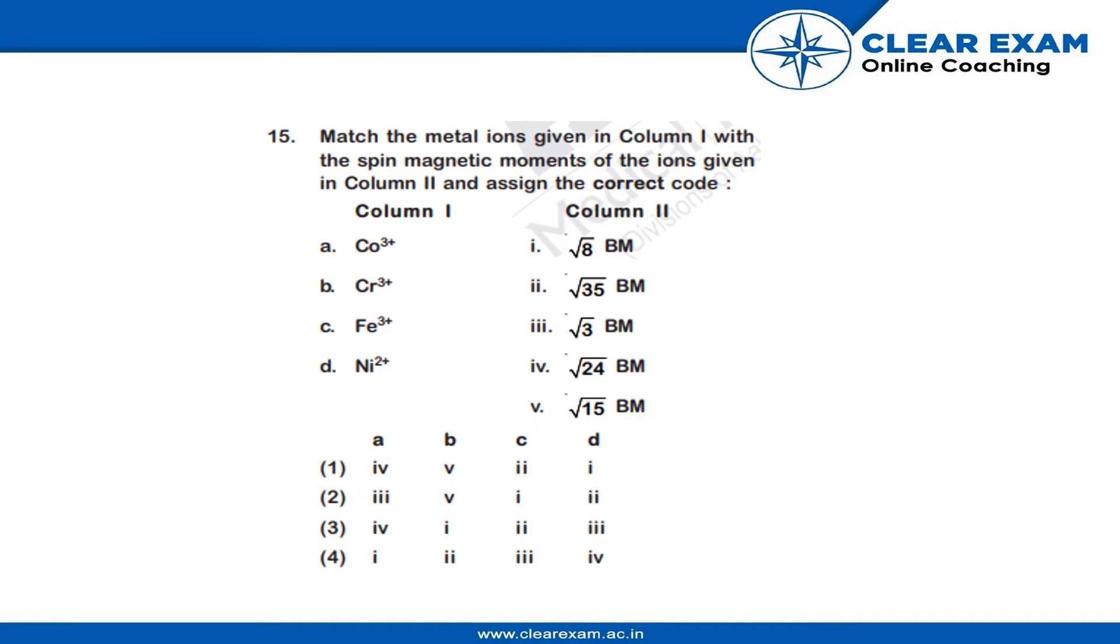The question asks us to match the metal ions given in column 1 with the spin magnetic moments of the ions given in column 2. Column 1 has Co3+, Cr3+, Fe3+, Ni2+. Column 2 has √6 BM, √35 BM, √3 BM, √24 BM, and √15 BM.